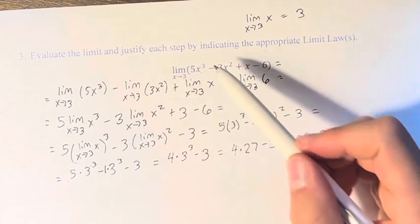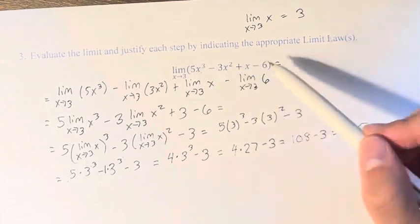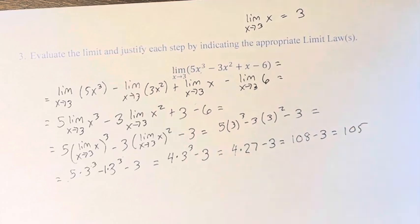So the limit as x approaches 3 of 5x cubed minus 3x squared plus x minus 6 is equal to 105.